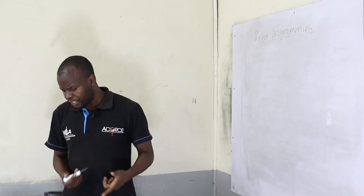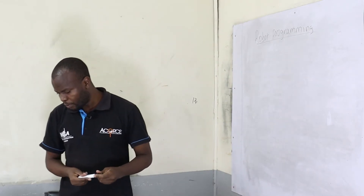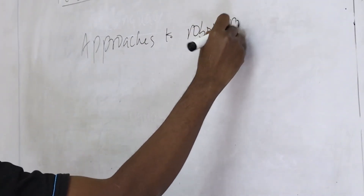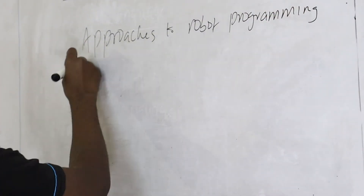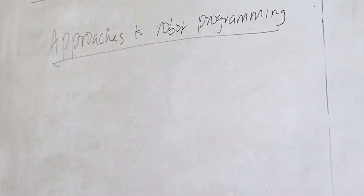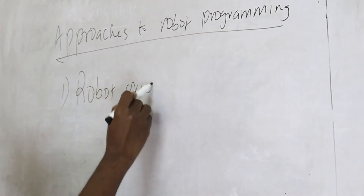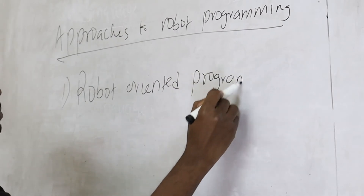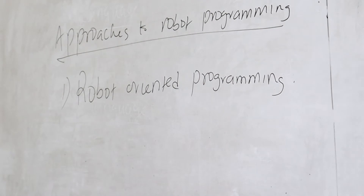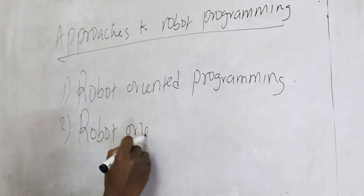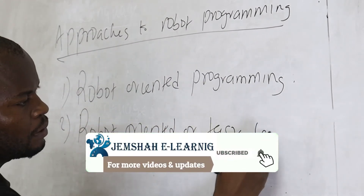What are the approaches to robot programming? Generally, there are two approaches: one is robot-oriented programming, and the other is object-oriented or task-level programming.